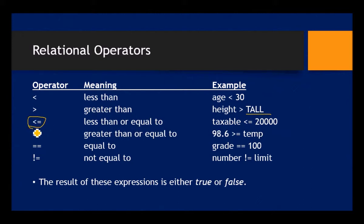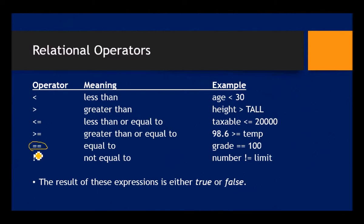Less than or equal: whenever you have operators comprised of two symbols, there's never a space between those — it's the less than and then the equal sign. Greater than or equal. Equal to: notice two equal signs. There's a distinction in C++ between doing a comparison and using the equal sign as an assignment operator.